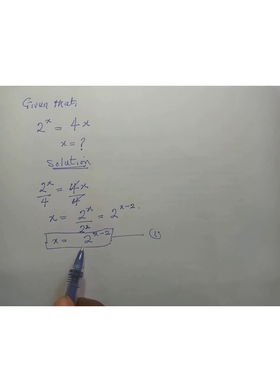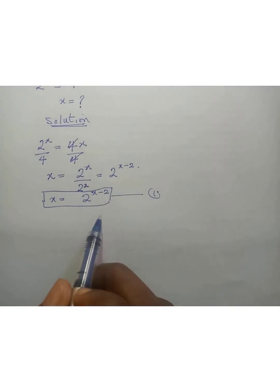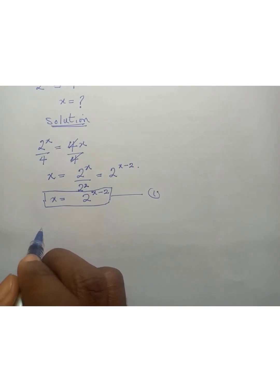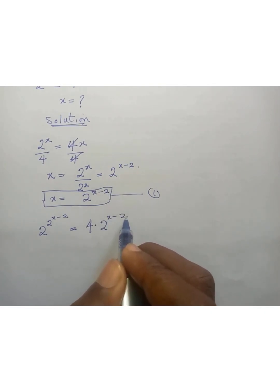Now put this power of x back into our original equation. Whenever we have x, we replace it with 2^(x-2). So here we have 2^(2^(x-2)) = 4 · 2^(x-2).